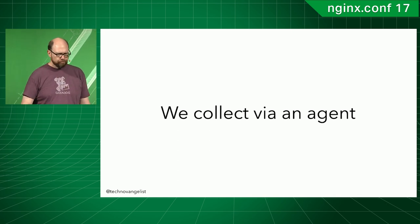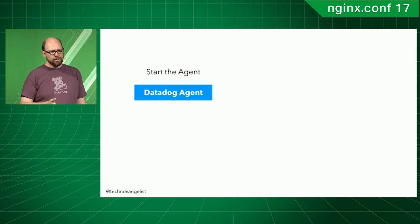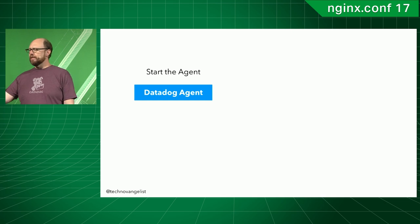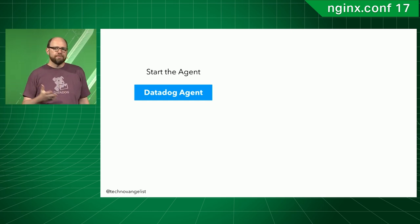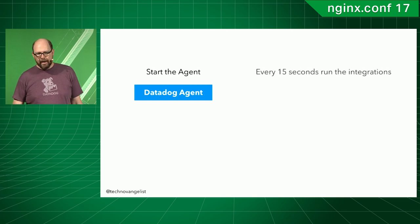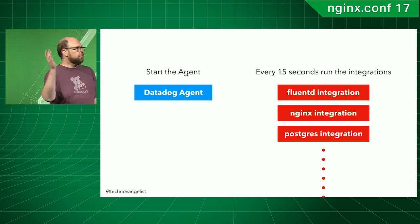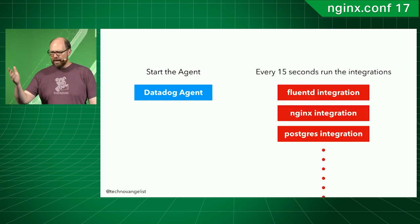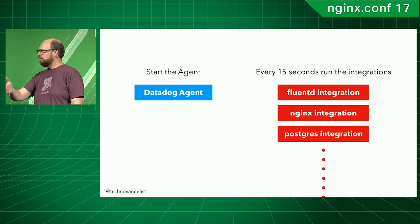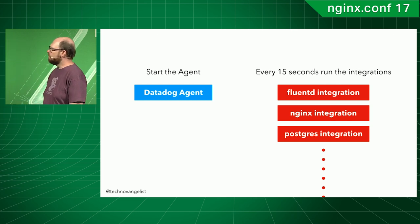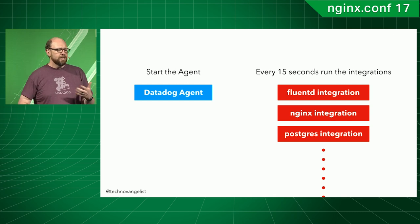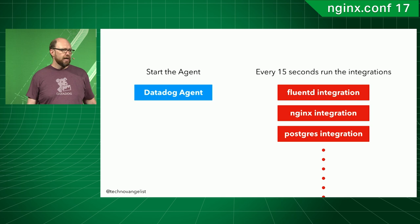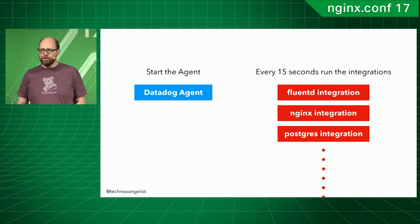You install the agent, and then you create some configuration files for all the different integrations that you care about. Every 15 seconds, we'll go through all of your integrations. We're at an Nginx conference, so Nginx is probably one of those integrations — but it could also be Fluentd, Postgres, or whatever else you care about.